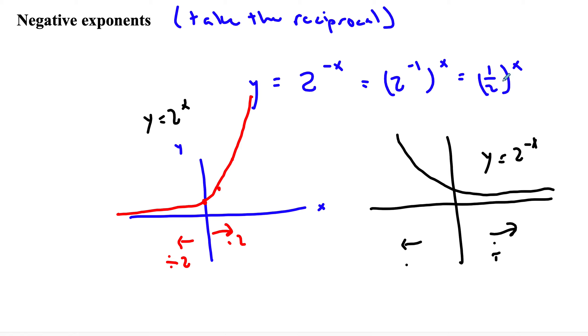This could be y equals 2 to the negative x, which by the way we've shown is the same as 1 half to the x. So this is the situation where we're talking decay, b is between 1 and 0, and here we're talking b is more than 1.